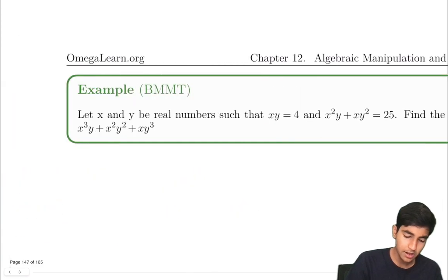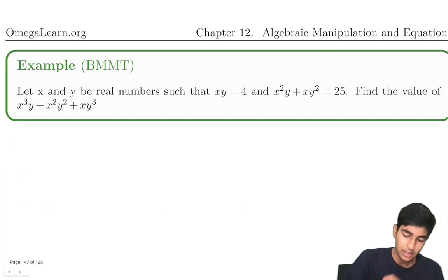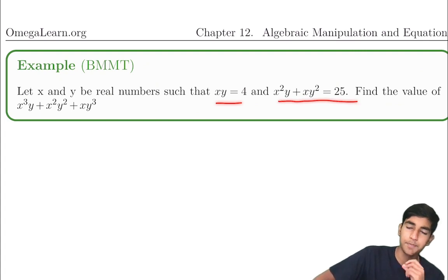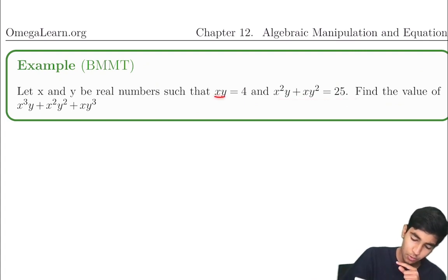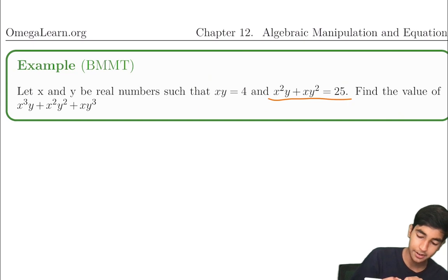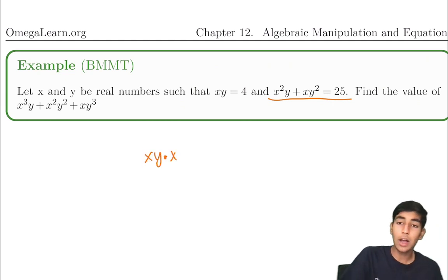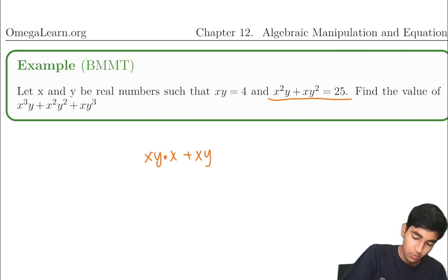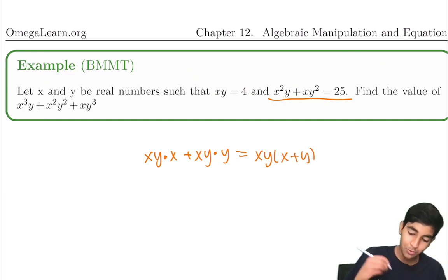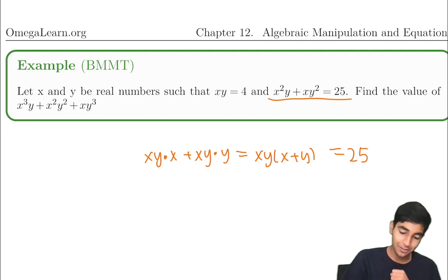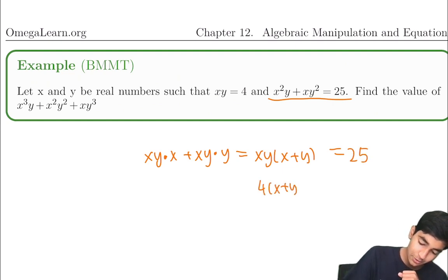Let's see how we can approach this. For x squared y plus x y squared: notice that x squared y is just xy times x, and xy squared is just xy times y. So we can factor this as xy times (x plus y), and we know xy equals 4. Therefore 4 times (x plus y) equals 25, so x plus y equals 25 over 4.